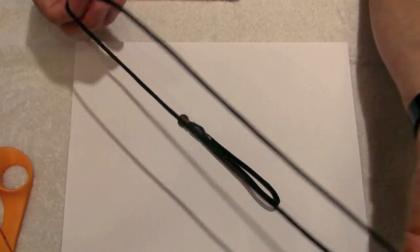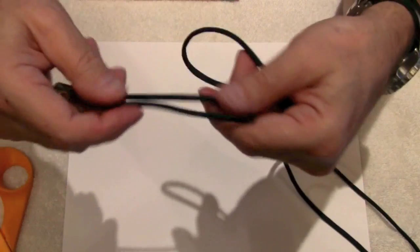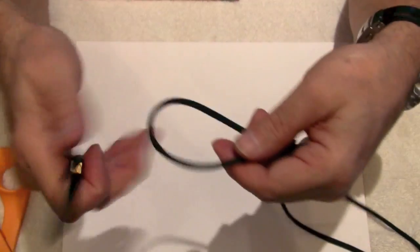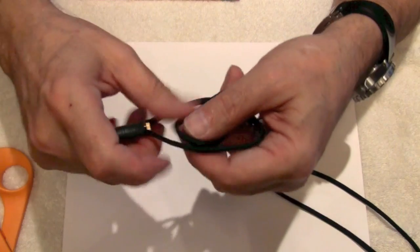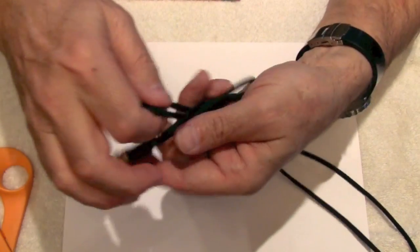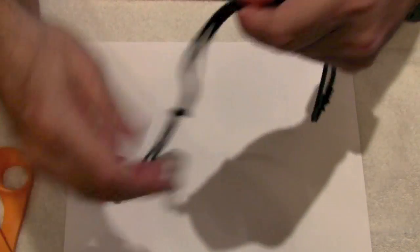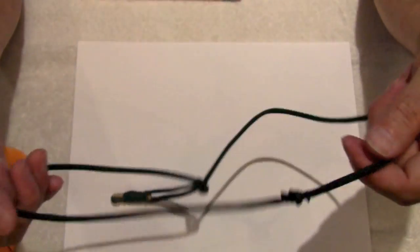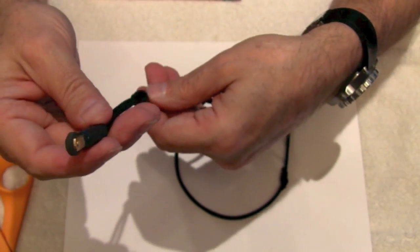Now the way you use this with this loop is you just put the two loops together, run the longer loop over the device, in this case the brass striker, just like that. Now you can hang this around your neck, tuck that in your shirt, and it's secured.